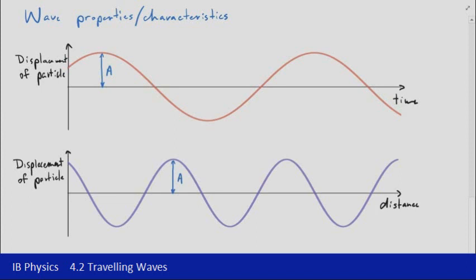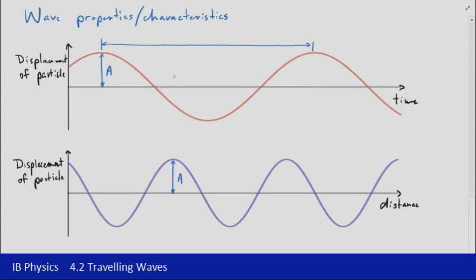That displacement of the particle from its equilibrium position will be the same on both graphs. On the top graph, we're identifying two consecutive points on the wave that are doing the same thing — from a peak to a peak, from a trough to a trough, or from a zero crossing going down through the equilibrium position. That time distance is the period, with symbol capital T. On the bottom graph, we have a similar quantity but related to distance rather than time — that distance is lambda, the wavelength. So the key quantities are amplitude, period, and wavelength, and there are a couple of others that tie into those.